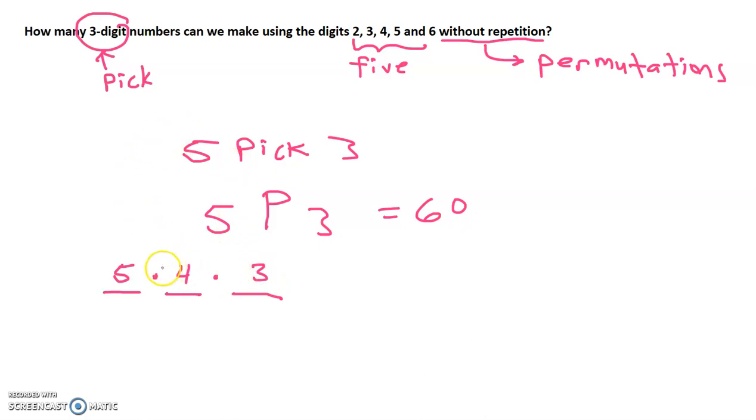If you want to find all of the possible ways that you can form a three-digit number, you can just multiply the number of ways you can pick the first digit times the number of ways you can pick the second digit times the number of ways you can pick the third digit. So in other words, five times four times three.